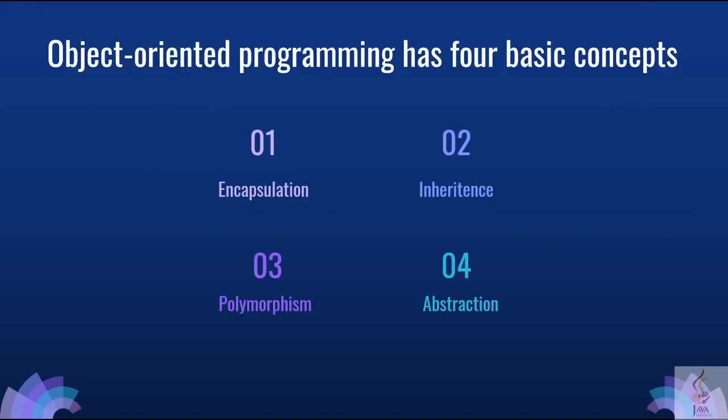As you can see, there are 4 basic concepts of object oriented programming: encapsulation, inheritance, polymorphism and abstraction.